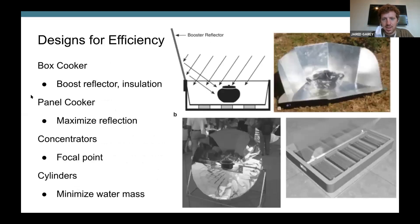So I'm going into the design of each type a little bit more. The box cooker on the top left has the boost reflector and insulation around the box. The idea of this is to have a simple design, simple geometry that can increase the heat going in and maintain it.